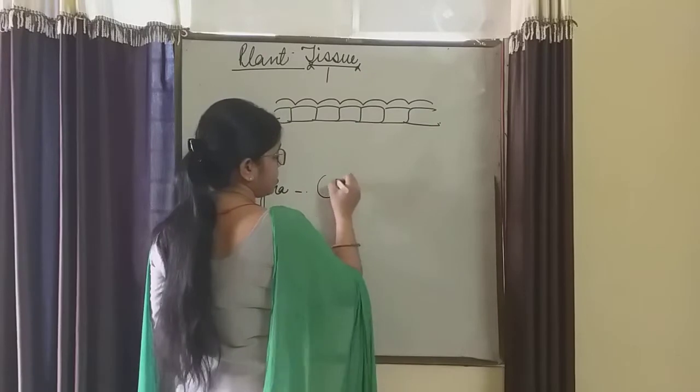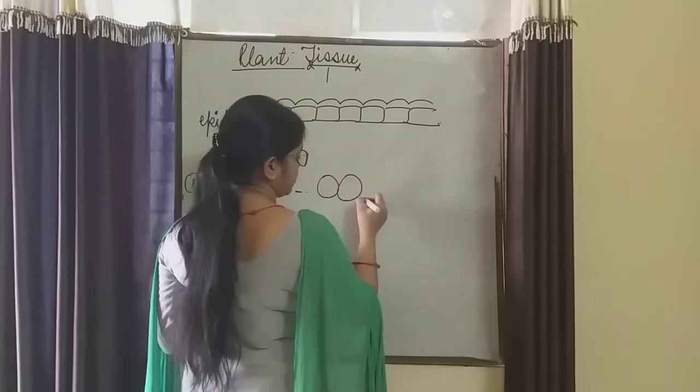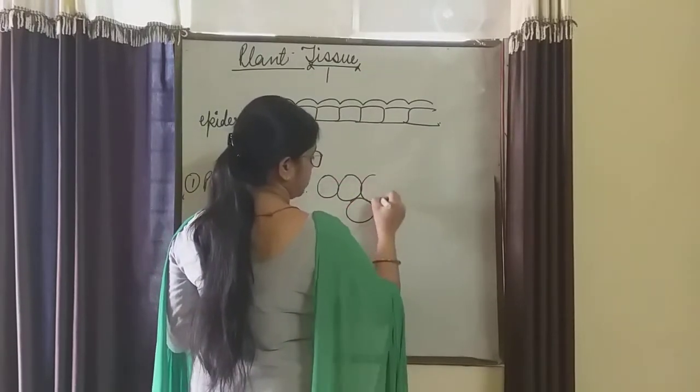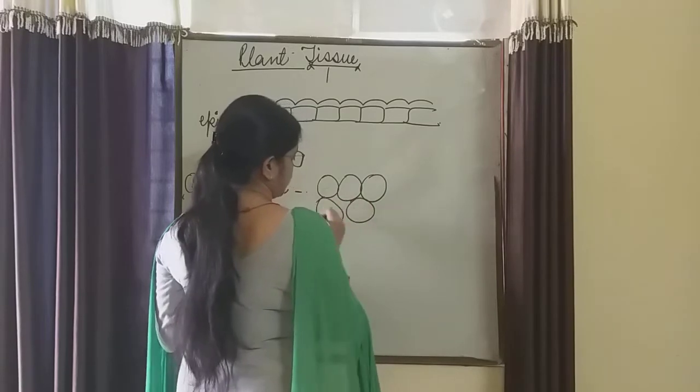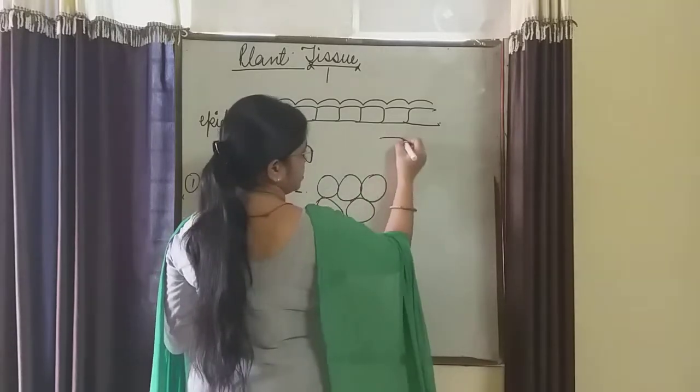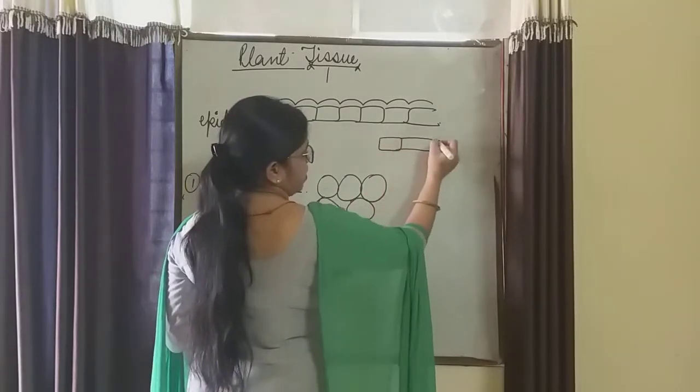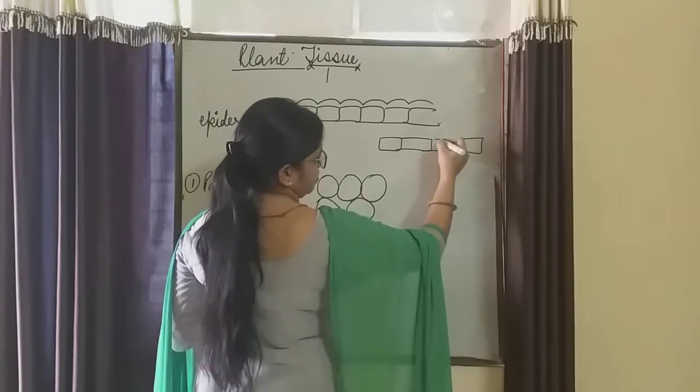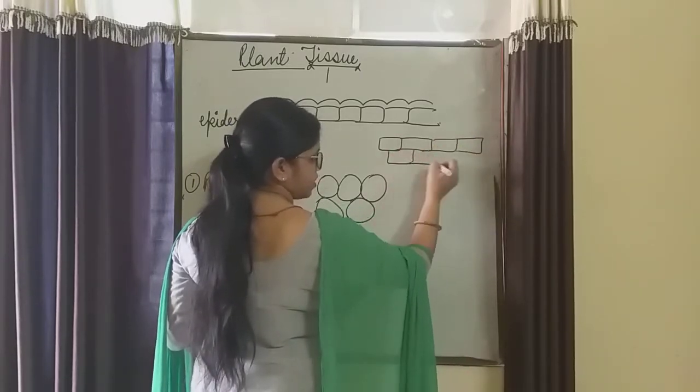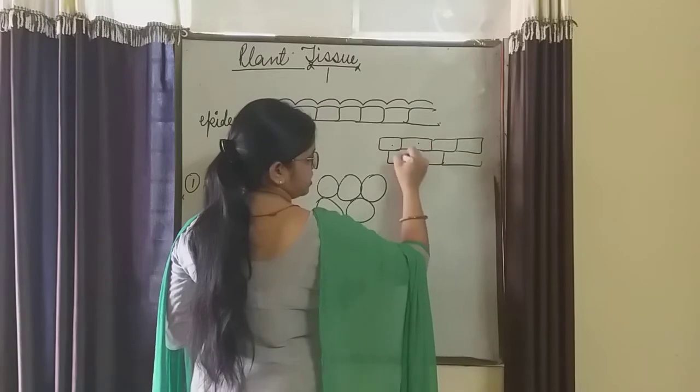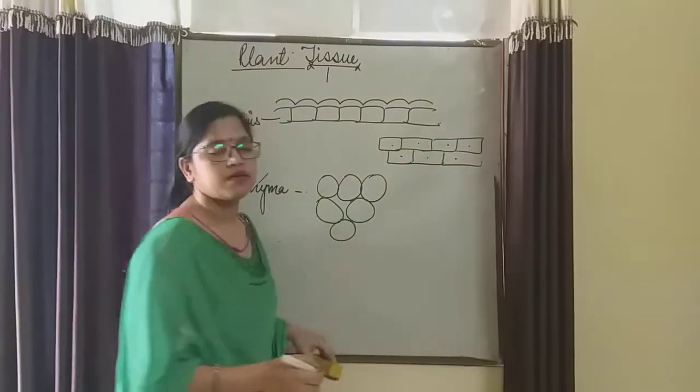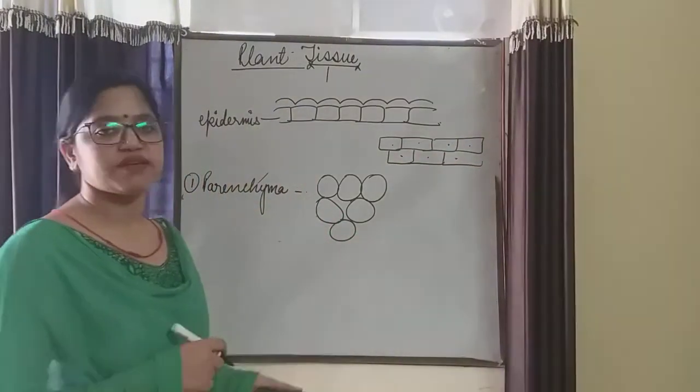Parenchyma cells are oval, they can be polygonal, and they can also be rectangular. You have studied onion peel in earlier classes. I will show you again in practical. In that you can see rectangular cells. These are known as parenchyma cells.